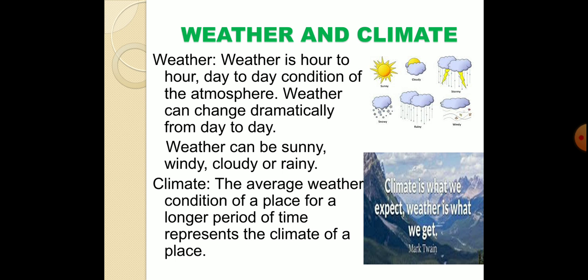The average weather condition of a place over a longer period of time represents the climate of that place. For example, India is considered a hot and humid country. Climate describes how the weather is at a particular place over years, whereas weather refers to the hour-to-hour or day-to-day changes — whether it is sunny, cloudy, stormy, snowy, rainy, or windy.